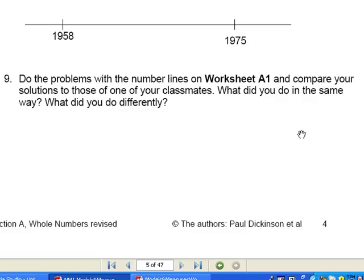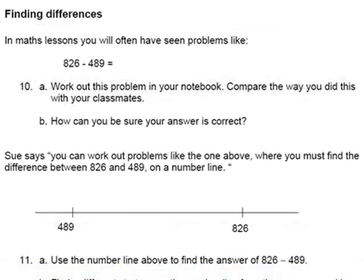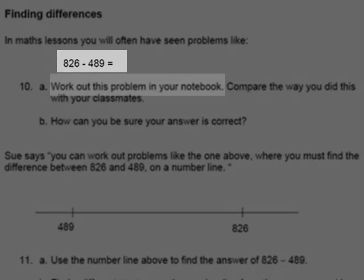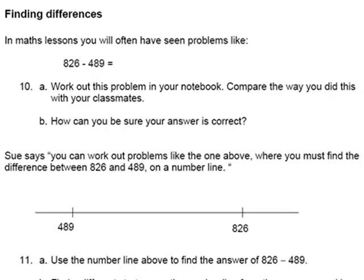And the emphasis here is to practice the jumping up on the number line model for subtraction, but also to compare how that's done, effective strategies one person and another. So that's why the question asks them, what did you do in the same way? What did you do differently? This is interesting. In a maths lesson you've often seen problems like this, 826 minus 489. Work out this problem in your notebook. What we find students doing is going back to the vertical algorithm and often making mistakes with that. For example, 6 take away 9. Well, that's 3. So that's an interesting question because I think that will be around in the classroom. They do try to do the vertical algorithm and some of them are successful in that. There may be other ways around. It would be interesting also to see, do they now, having had this experience of the number line, use that? Probably not.